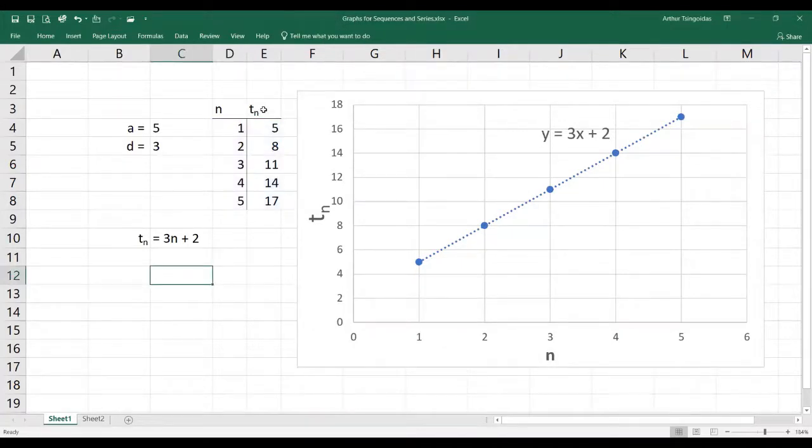Now, here I've got the terms of this arithmetic sequence and I use this table to create that graph. Clearly the value of a is 5 and the value of d is 3. What I also have is an expression that gives me the value of any term in this sequence.